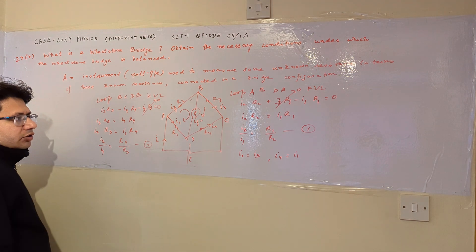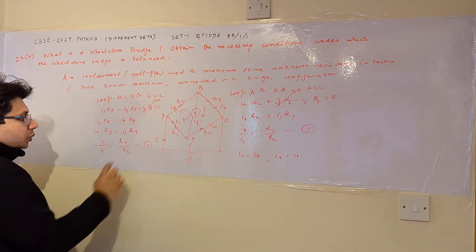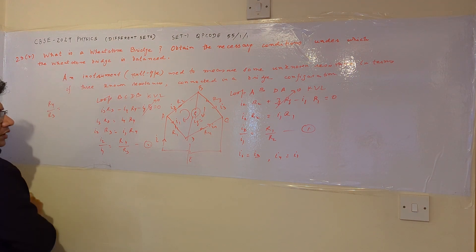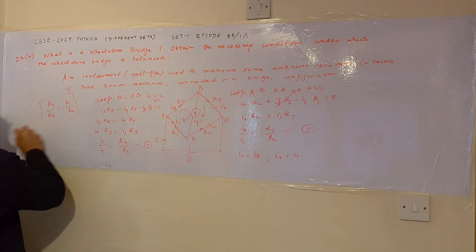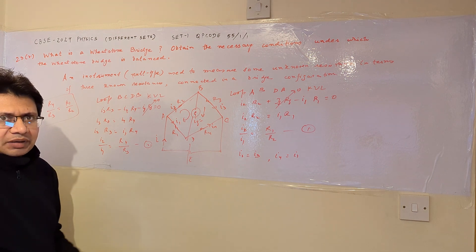Now comparing these two equations, equation 1 and equation 2, we can easily see that R4 upon R3 is equal to R1 by R2. So this is the particular condition for the bridge to be in the balanced state.